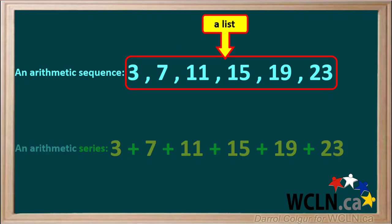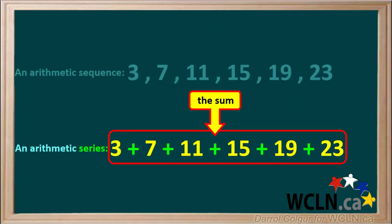Looking at another difference, an arithmetic sequence is a list of numbers, whereas in an arithmetic series, we are focused on the sum of the set of numbers.